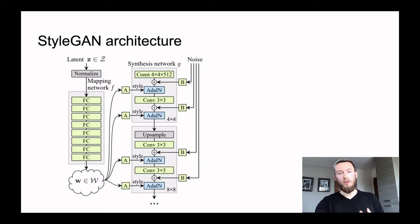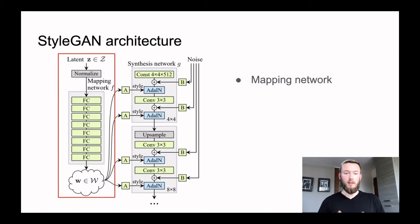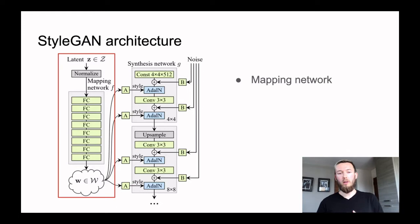The first improvement compared with previous models is the mapping network. It feeds to the generator network not just the random latent variable z, but it processes this latent variable through a few fully connected layers and makes another latent variable w, which has more meaning inside. For example, in the w variable the model could encode some higher-level concepts, like which style or which genre of paintings would be produced by the generator.